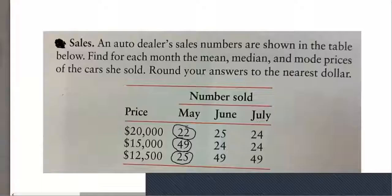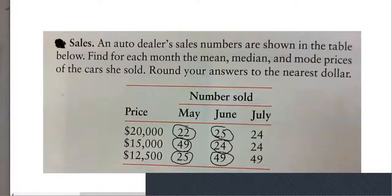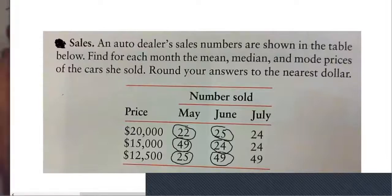Now let's look at June. We'll start with the mean. In June we sold 25 cars for $20,000, 24 cars for $15,000, and 49 cars for $12,500.